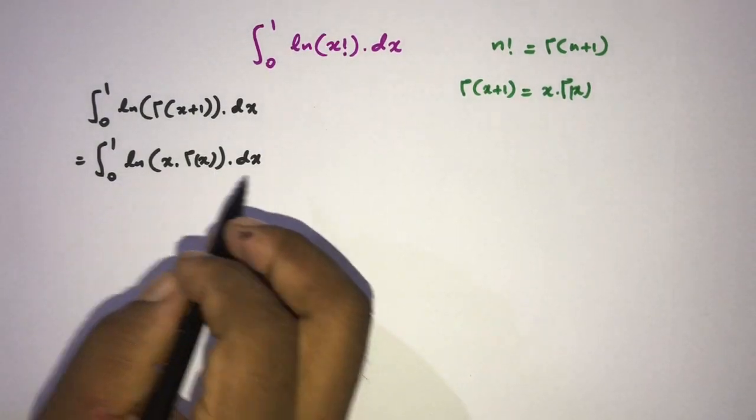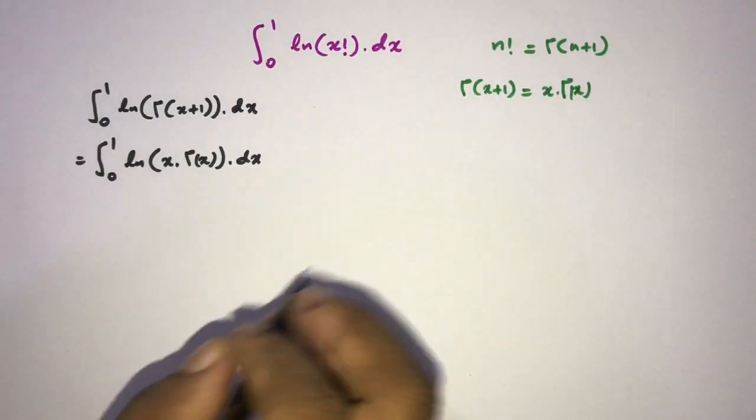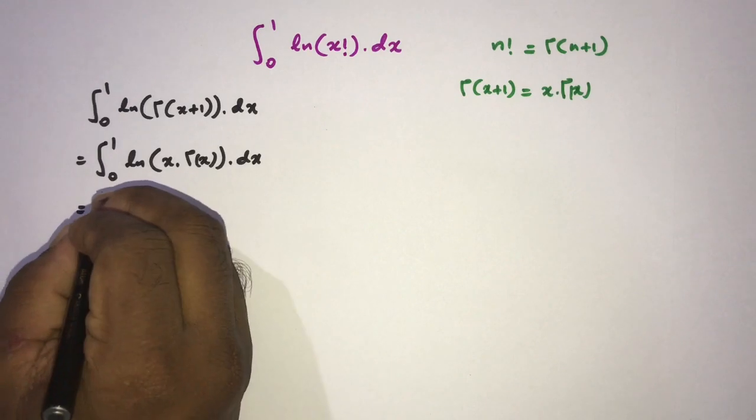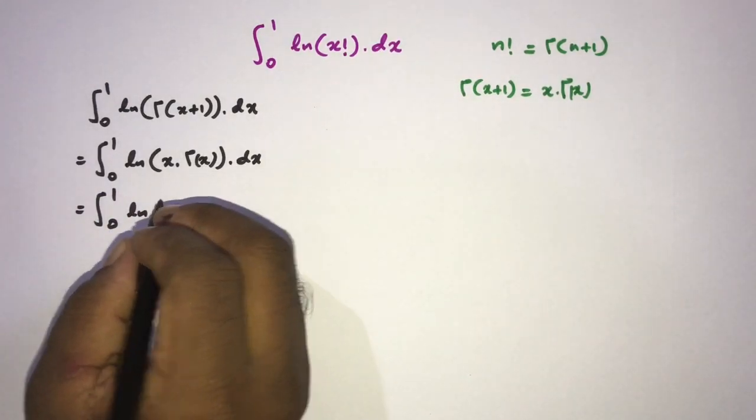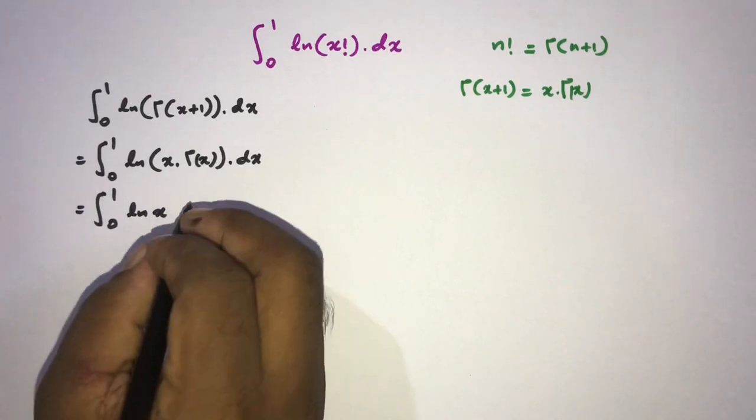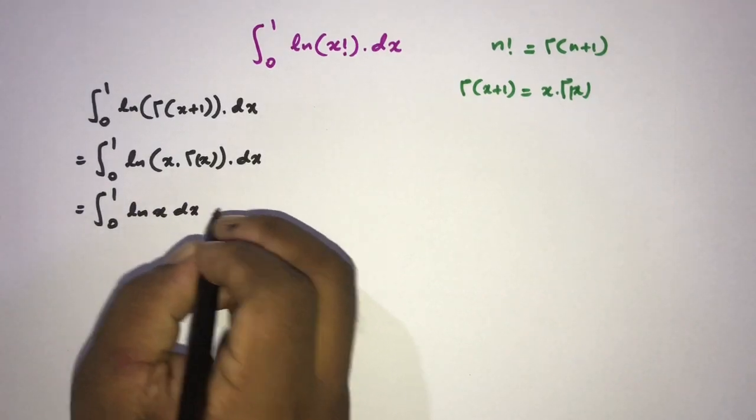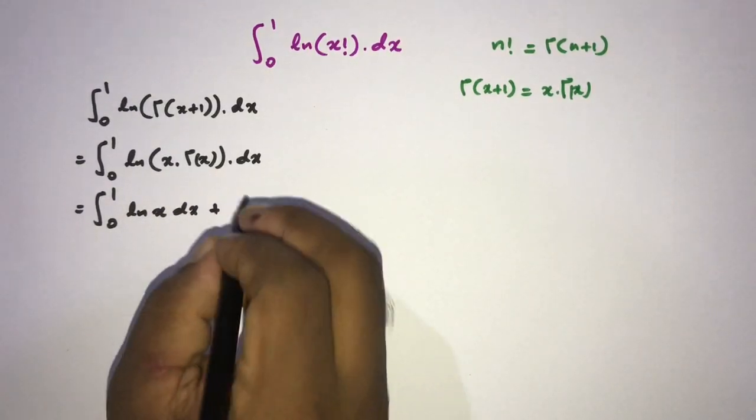Now here we have natural log of product of two functions. According to property of natural log, we can write integral from 0 to 1, natural log of x dx plus integral from 0 to 1, natural log of gamma of x dx.